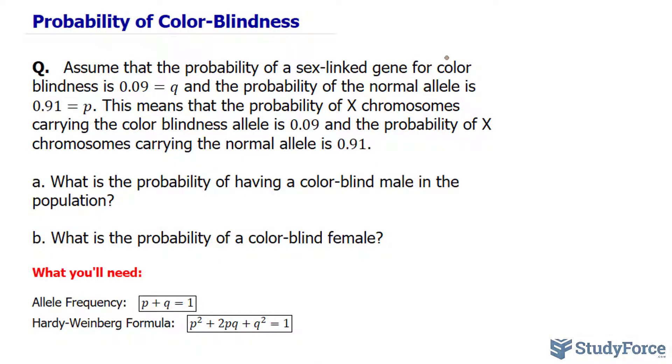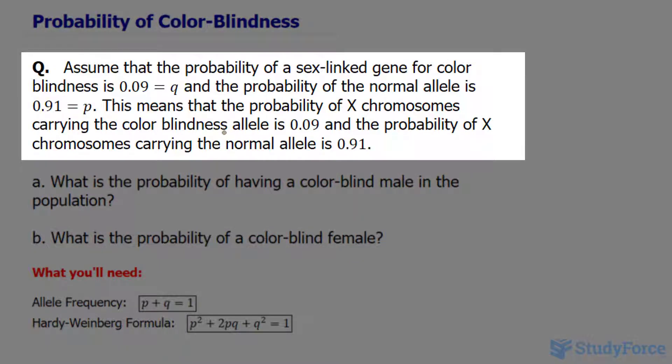Now a sex-linked gene is a gene that exists on the sex-determining chromosomes. So this is not an autosomal trait. In a human, this gene would exist on the 23rd chromosome. This means that the probability of X chromosomes carrying the colorblindness allele is 0.09 and the probability of X chromosomes carrying the normal allele is 0.91.